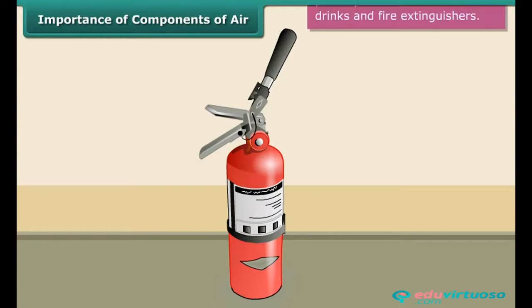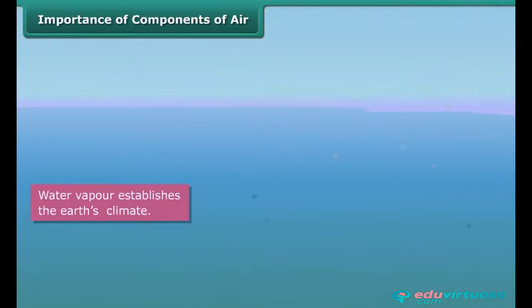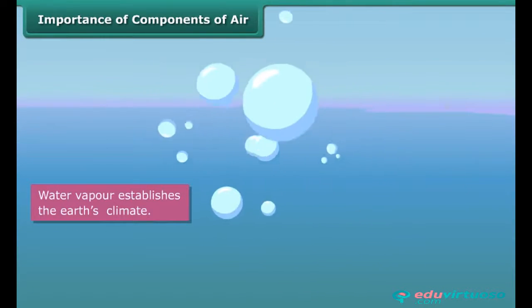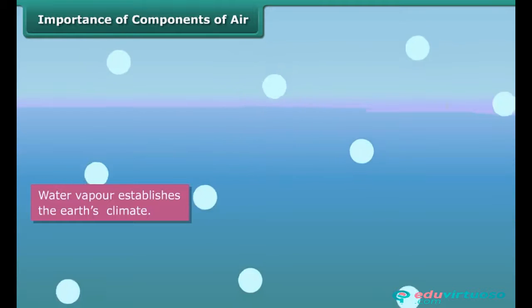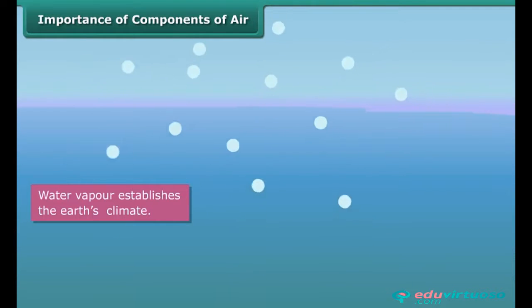Water vapor plays an important role in the water cycle. It helps maintain the temperature on earth by trapping the infrared radiation of the sun.